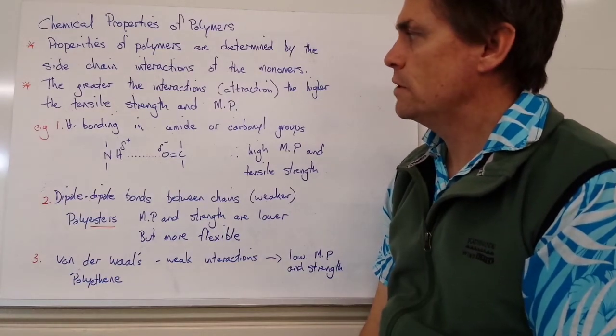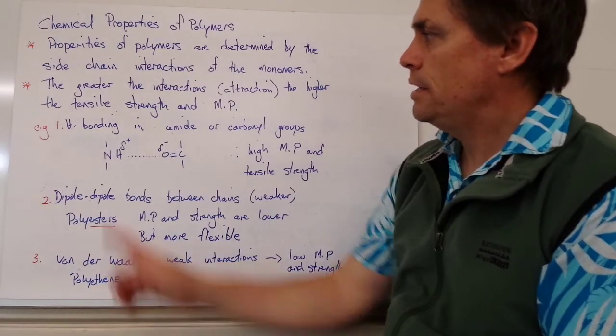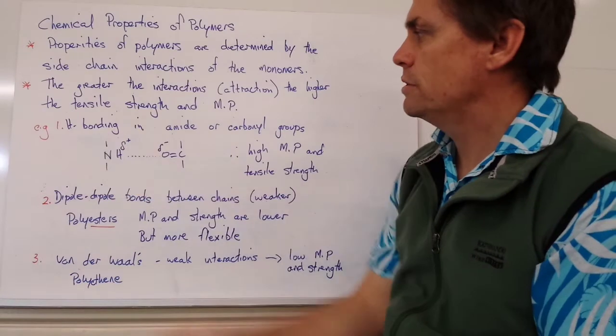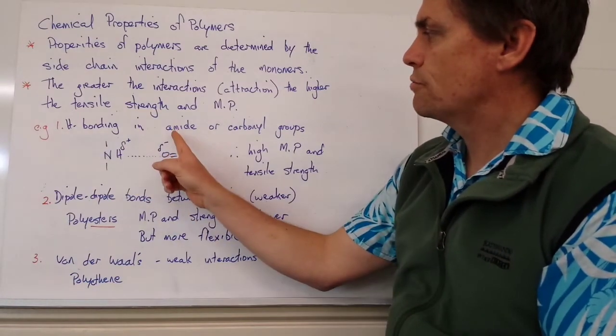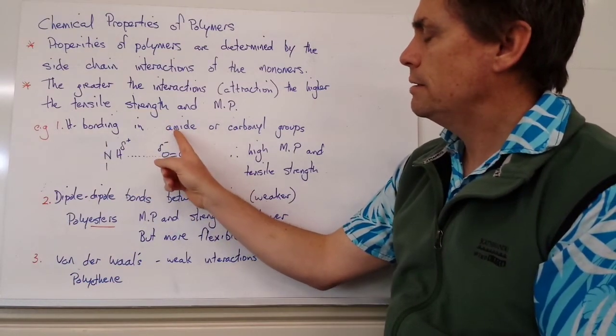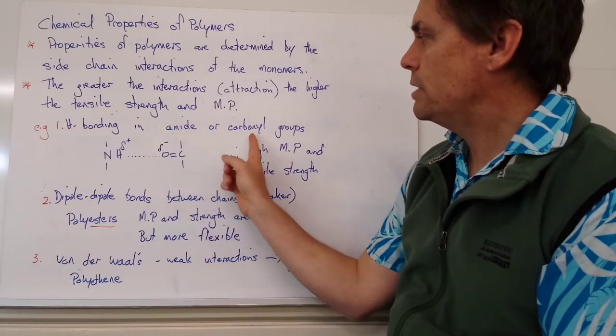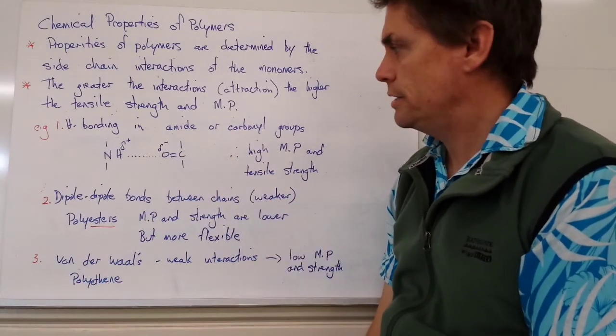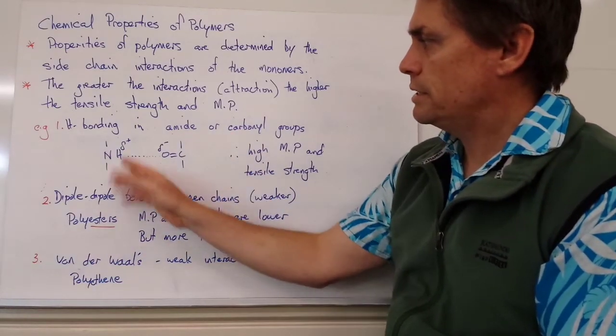Let's look at three examples of those types of interactions. In the first one, we can have hydrogen bonding, and we can get that through an amide side chain interacting with a carbonyl side chain. Let's look at an example.